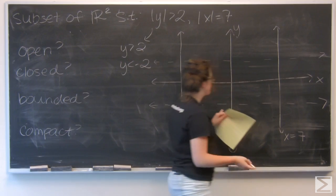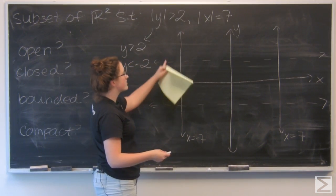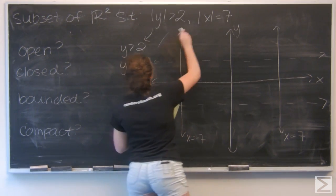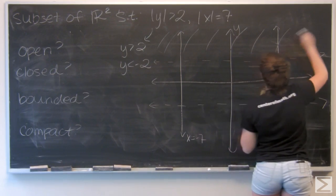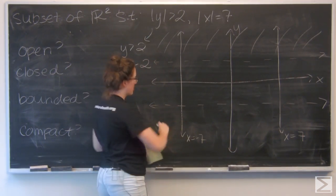So dashed lines means I'm not actually including this line, but I'm looking at everything above up here and below down here.